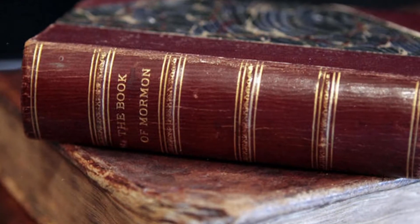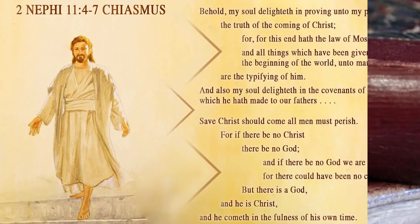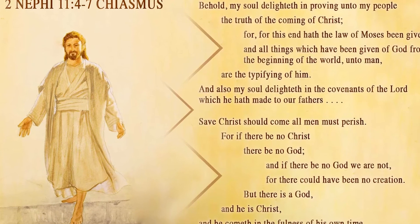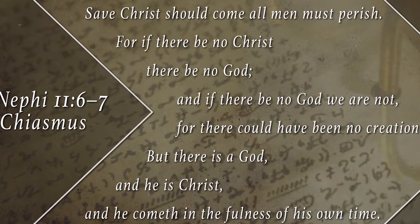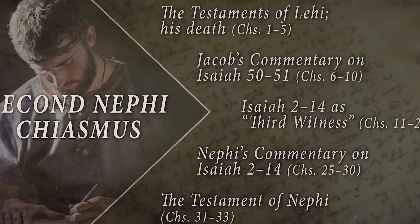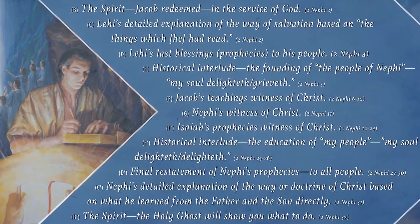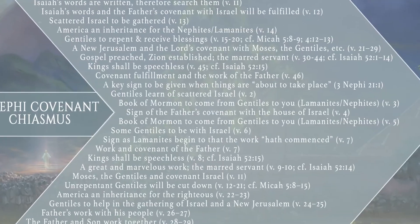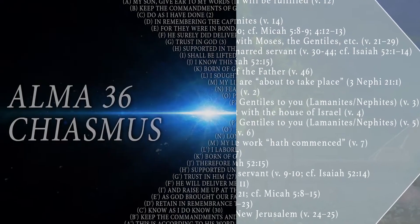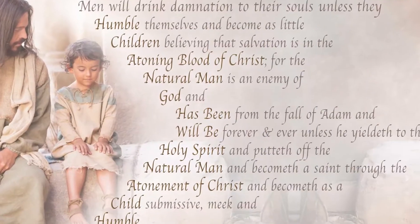The Book of Mormon contains many impressive and interesting chiasms. Many have caught the eyes of scholars due to their artistry, creativity, doctrinal emphasis, and ancient connections. Three chiasms were presented in Part 1, and now we present four more.